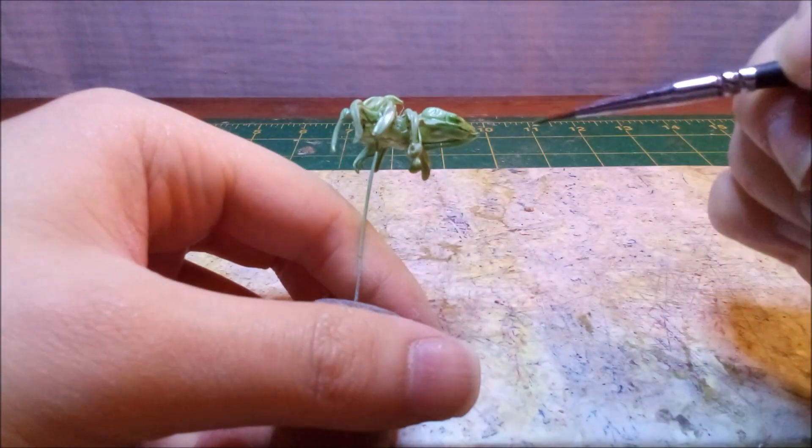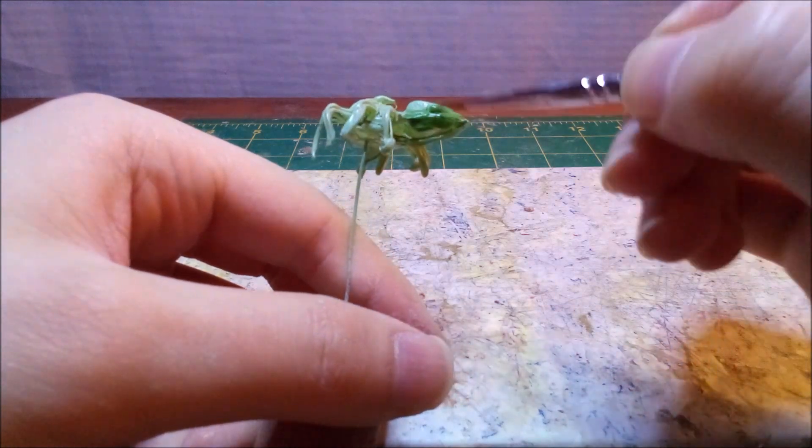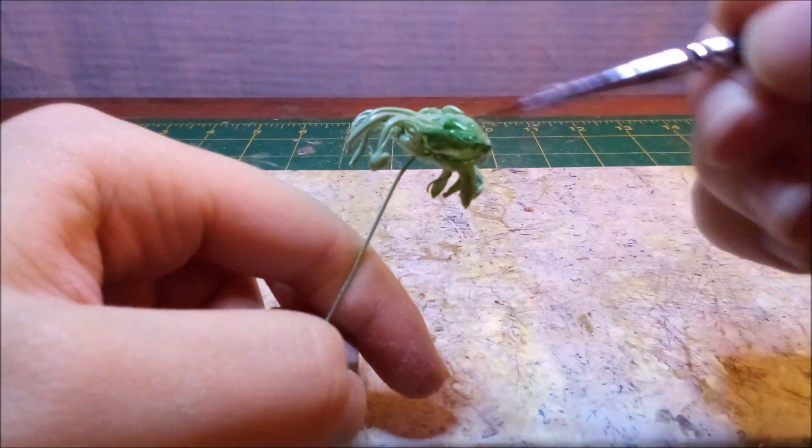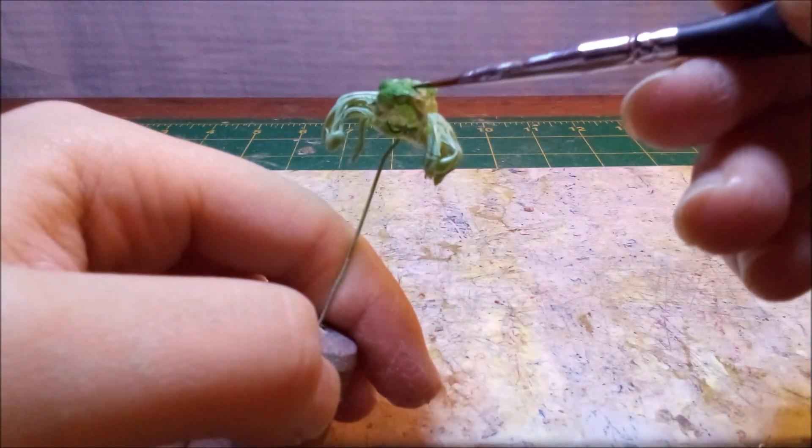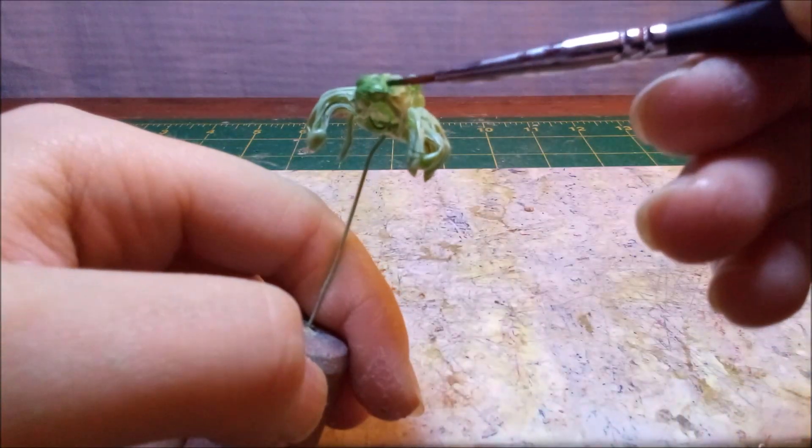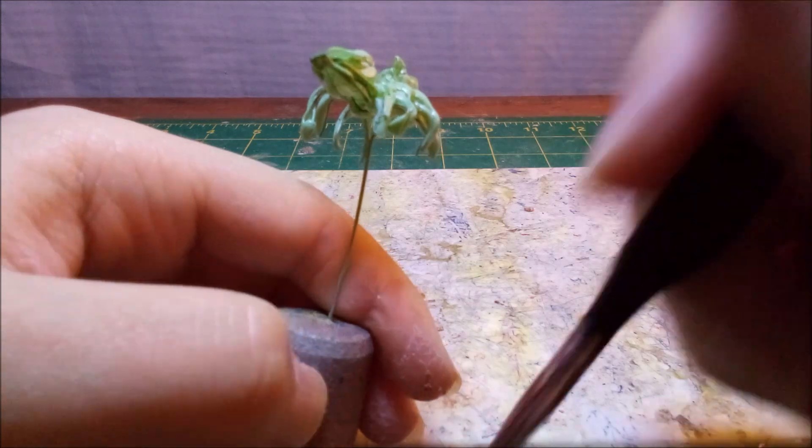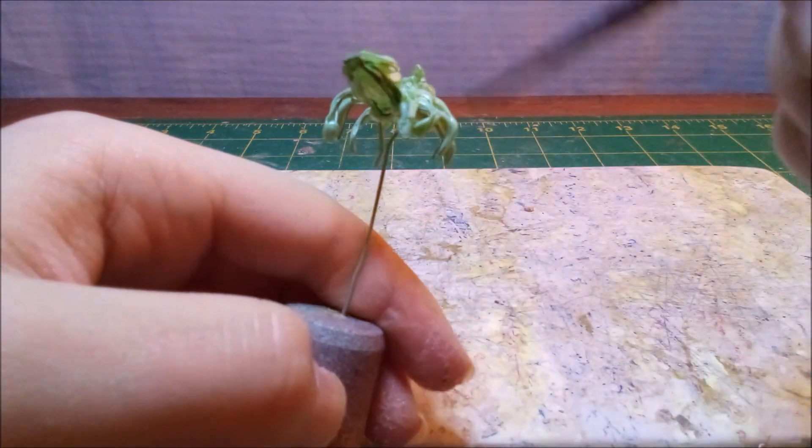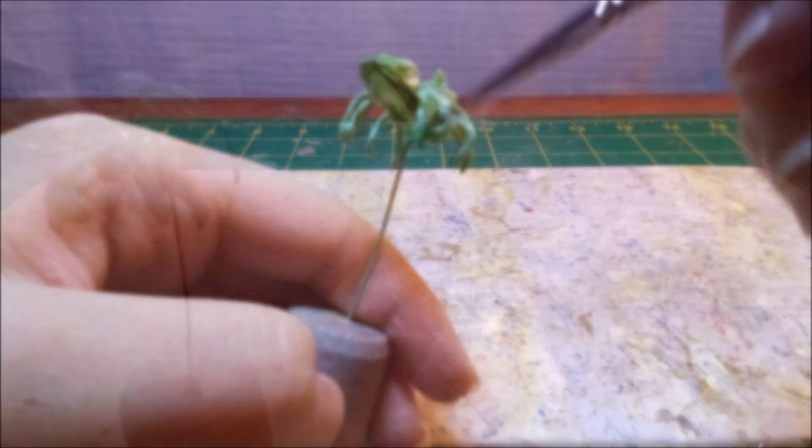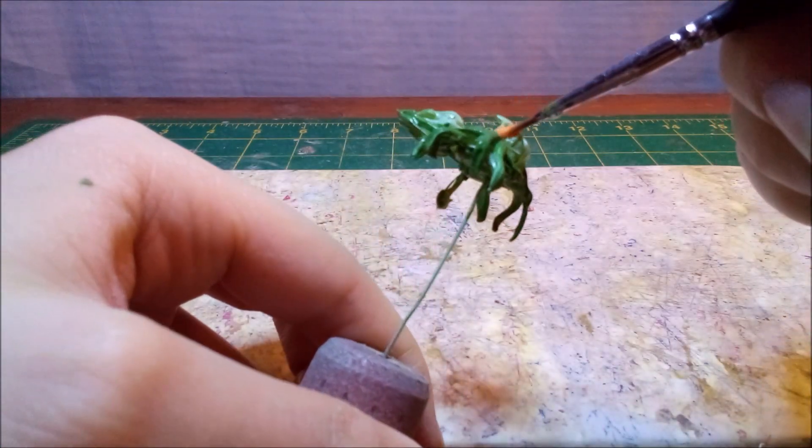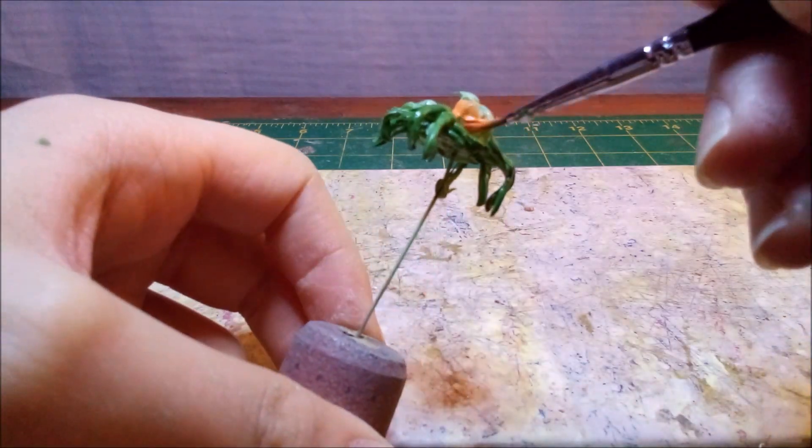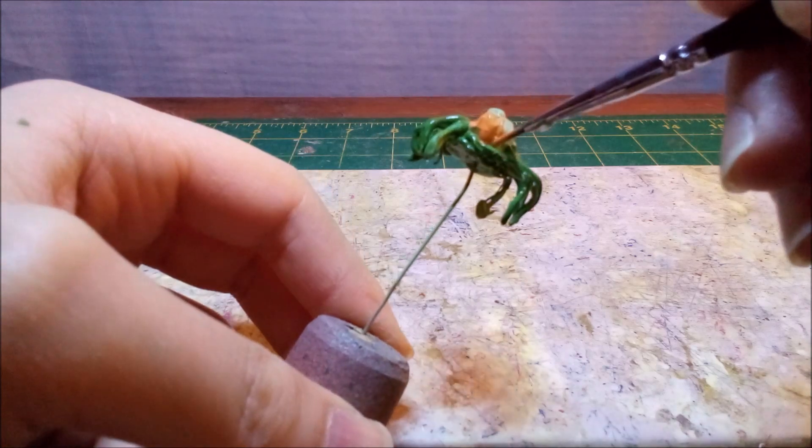After mounting the pumpkin spider on a wire and priming it, I give it a base coat of green. After I'm done painting green, I cover the pumpkins in an orange base coat. Using a smaller brush helps me be careful to avoid the green base coat.